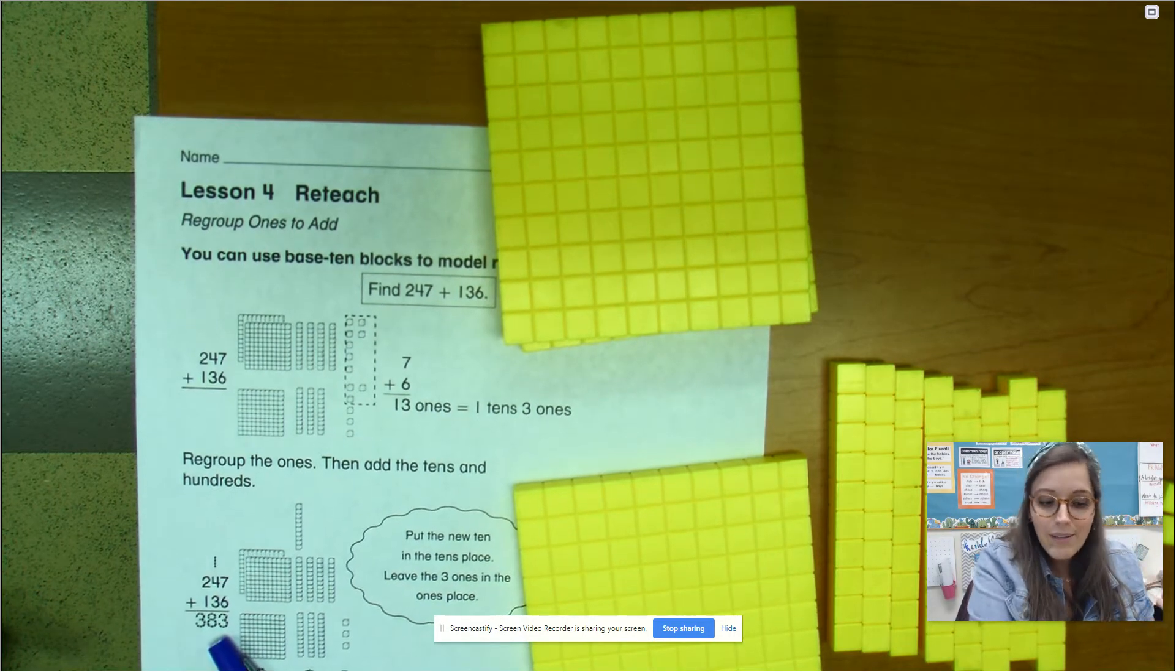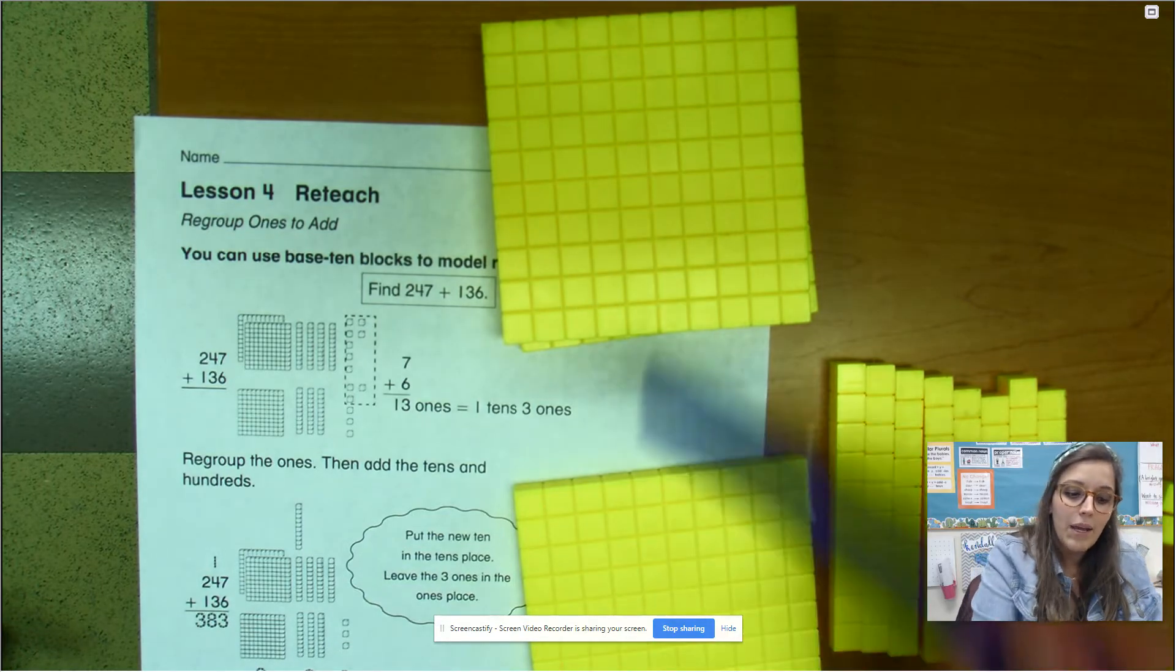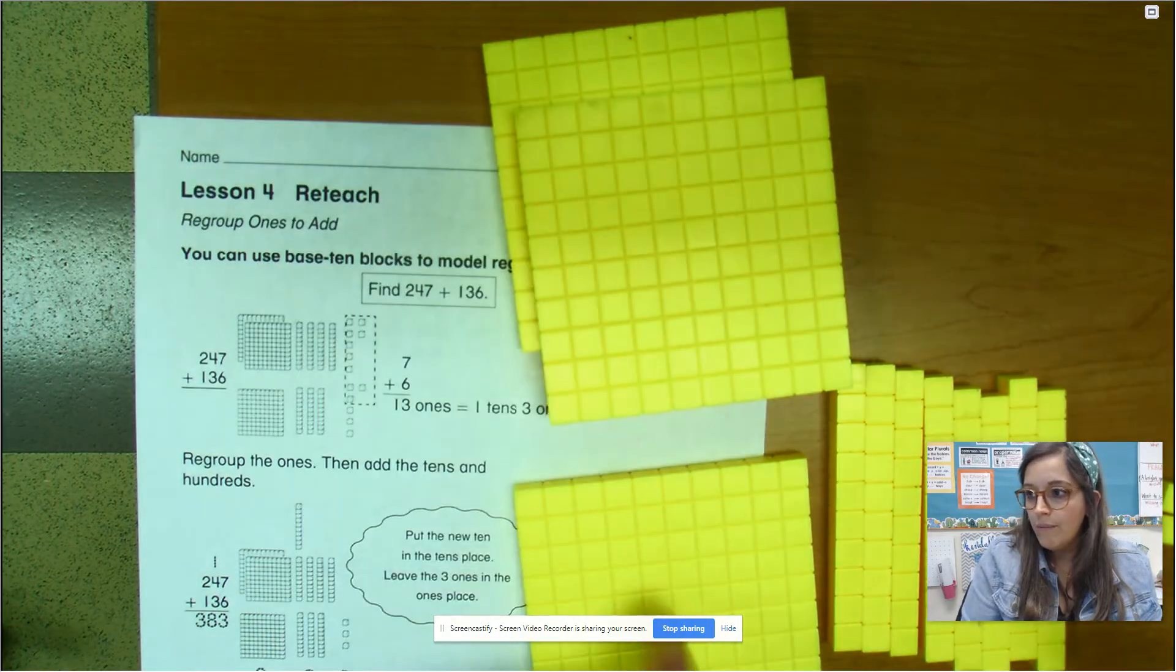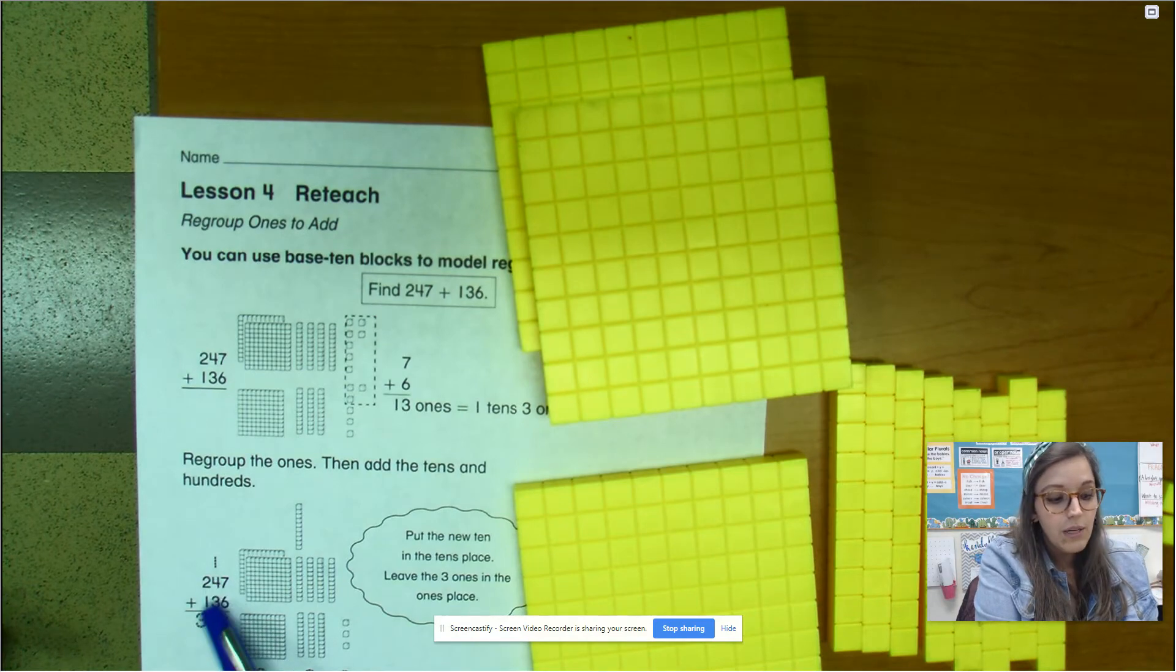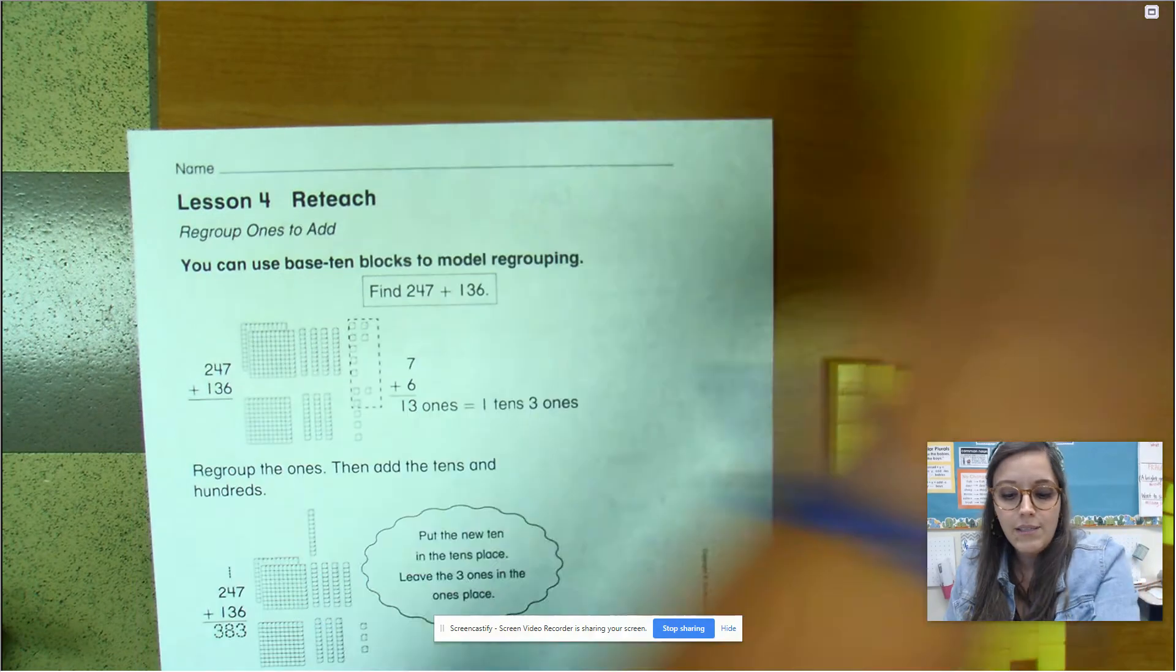Now the only thing we'll have to do is add the 100s. So now I have how many 100s all together? One, two, three. So two 100s plus 100 is three 100s. So let's practice that on our paper.